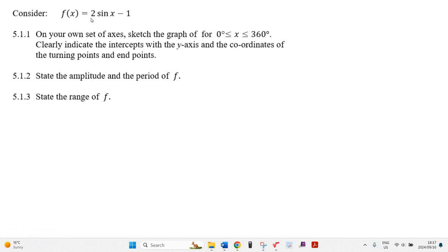It says sketch this graph, 2 sine x minus 1. Before I start, I've got a big advantage because I know that number 2 there means the amplitude. It's a sine wave that's twice as tall as it normally would be if it's just 1 sine x. And I know the whole thing is shifted down 1.